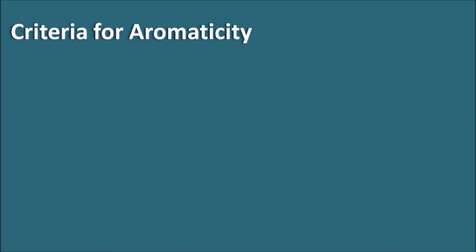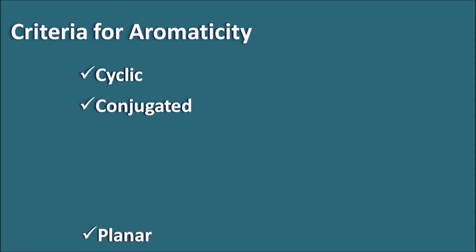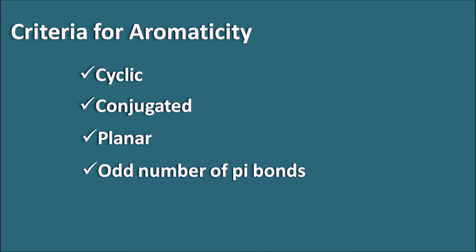Let us see the criteria for aromaticity. We have four criteria: first, the compound should be cyclic; second, it should have conjugated pi bonds; third, the compound should be planar — that means it should be a flat molecule; and finally, it should have an odd number of pi bonds.